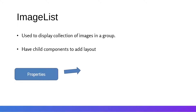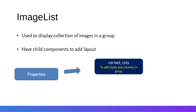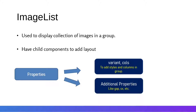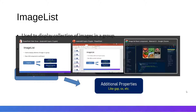We have several properties available. The variant property offers multiple predefined styles. Then we have the columns property to define how many images we want in a column on the web page. We also have a gap property to add spacing between images, which accepts a value in pixels, and the sx prop to define additional custom styles.